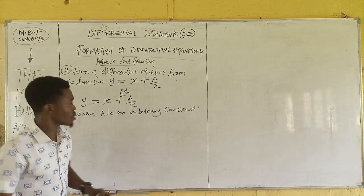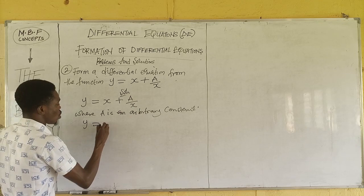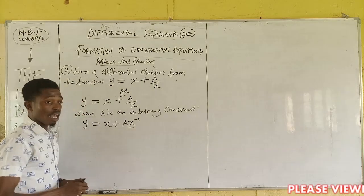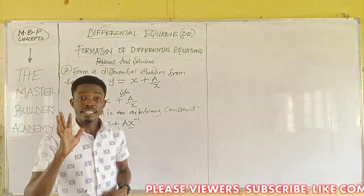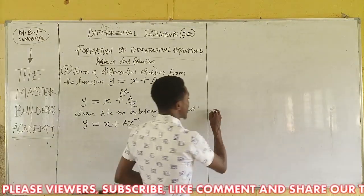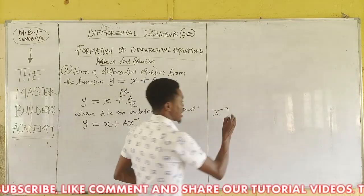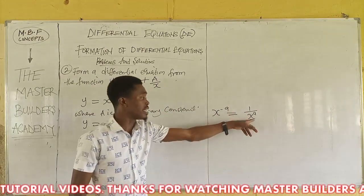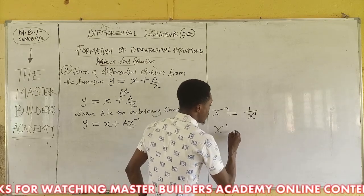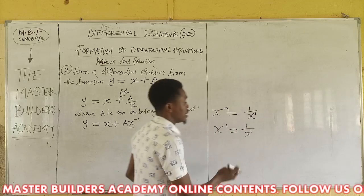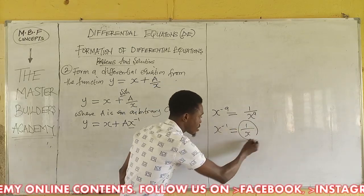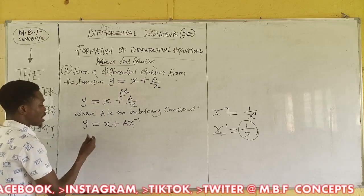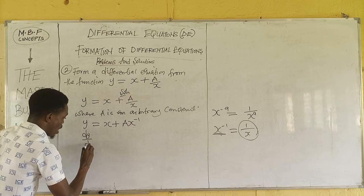We are going to have y = x + ax⁻¹. I got ax⁻¹ by using the fourth law of indices: x⁻¹ is exactly 1/x. So a/x becomes ax⁻¹. I rewrote it in this form so that it will be easy to differentiate. Now that this is understood, the next thing we are going to do is differentiate y with respect to x.